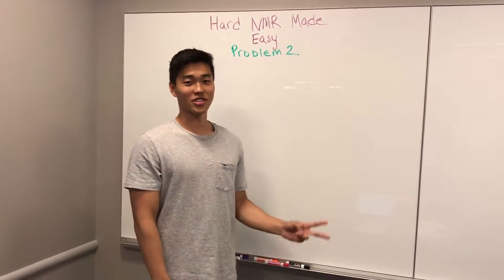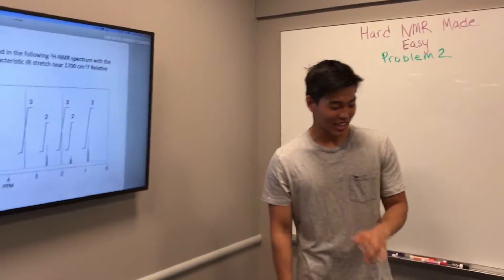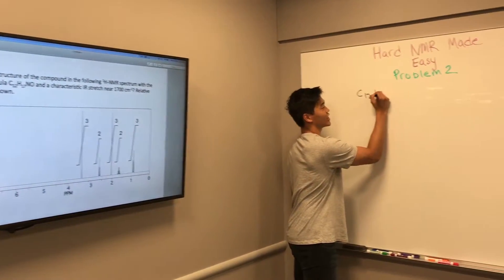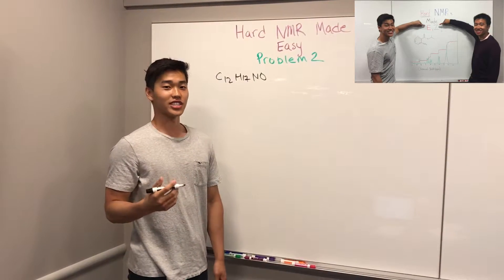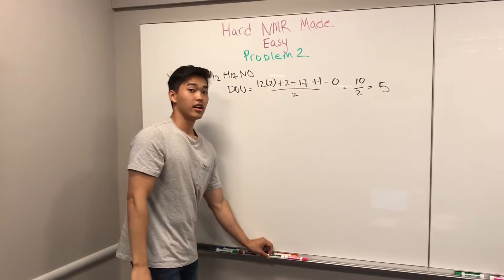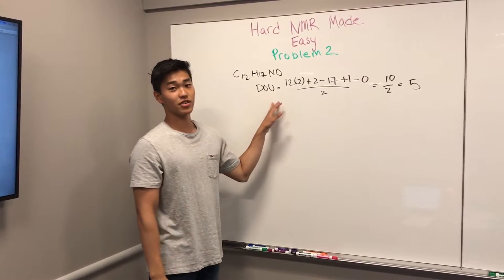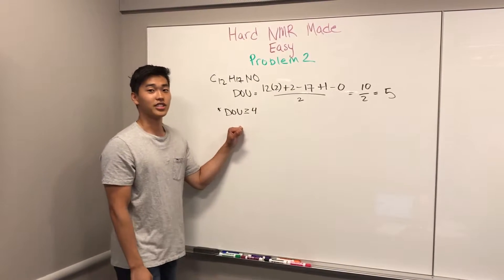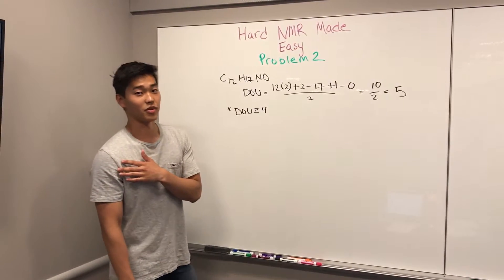Like Frank said, there are two possible solutions and we're going to go over them right now. The first parts of each solution are the same because we're essentially finding all the fragments and looking at the NMR spectrum. I'm just going to write the formula on the board: it is C12H17O. If you haven't seen problem 1, go look at it because we go over DOUs and integrations and everything. I'm going to figure out the degrees of unsaturation — the DOU equals 5. When the DOU is greater than or equal to 4, we most likely have a benzene.